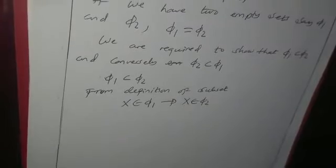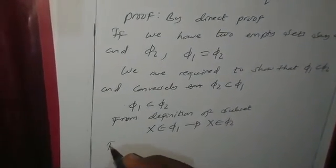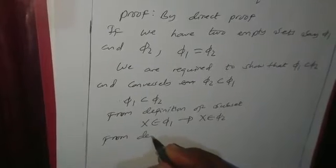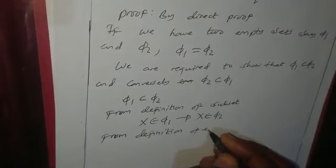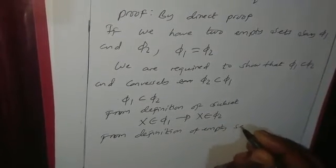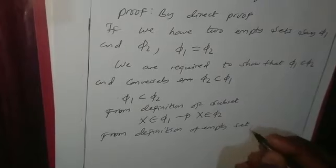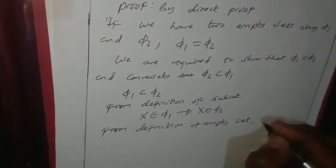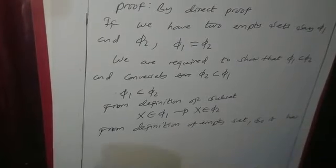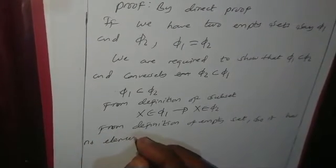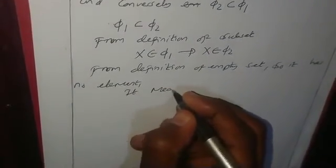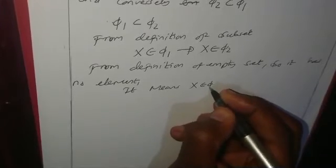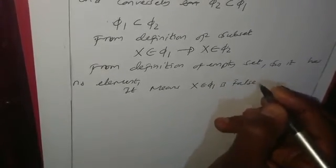But we know from the definition of an empty set that an empty set is a set which has no element. Since it has no element, the statement 'X is an element of empty set one' is false, denoted by capital letter F.